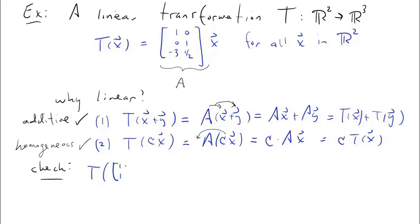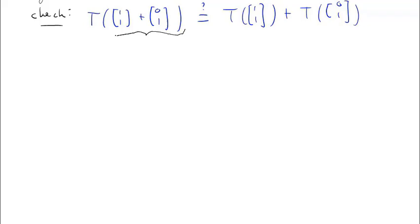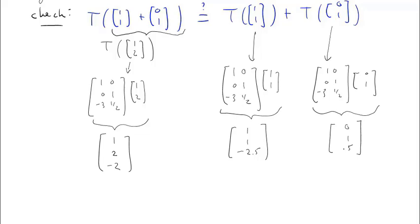Let's verify on particular vectors. We check whether T of (1,1) plus (0,1) equals T of (1,1) plus T of (0,1). Adding the vectors gives T of (1,2) on the left. Applying the matrix to each vector separately: on the left we get (1, 2, -2); in the middle T of (1,1) gives (1, 2, -2.5); on the right T of (0,1) gives (0, 1, 0.5). Adding the two right-hand vectors gives the left vector, confirming this equation is true.